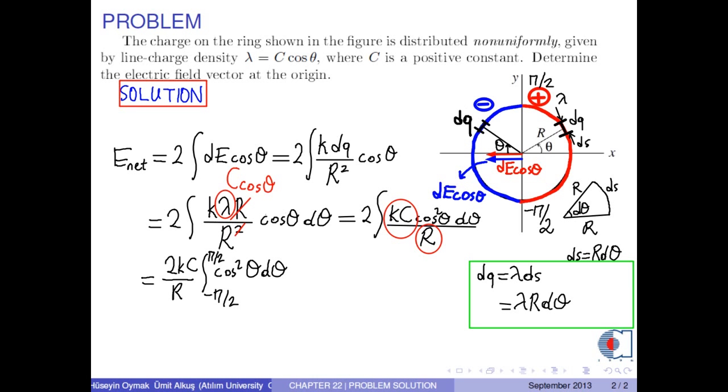The integral of cosine theta squared can be taken from the integral table as theta over 2 plus 1 fourth sine 2 theta.